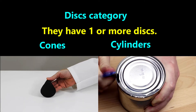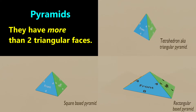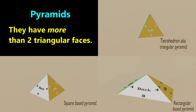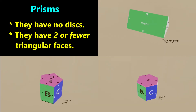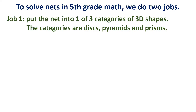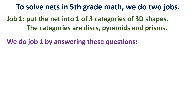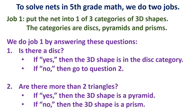To summarize: the unique feature of the disk category is one or more disks; the pyramid category has more than two triangular faces; and the prism category has no disks and two or fewer triangular faces. We do Job 1 by answering two questions. First, is there a disk? If yes, the shape is in the disk category. If no, go to question 2: are there more than two triangles? If yes, it's a pyramid. If no, it's a prism.